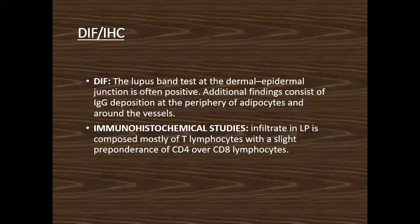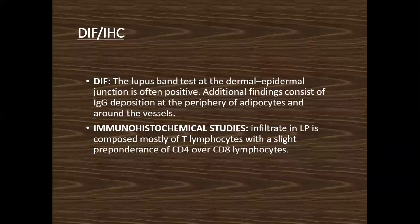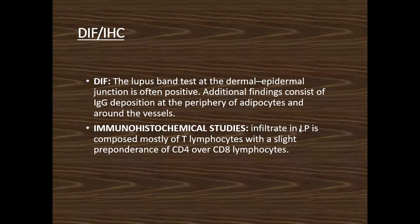On direct immunofluorescence studies of perilesional skin, we can find the lupus band at the dermo-epidermal junction — a mixed deposit of IgG, IgA, and IgM. Immunohistochemistry studies show that in lupus profundus, the most common T-lymphocytes are CD4-positive, which are more numerous compared to CD8.